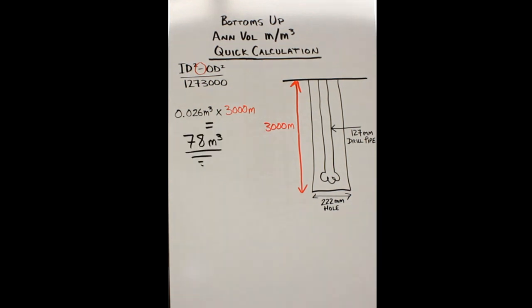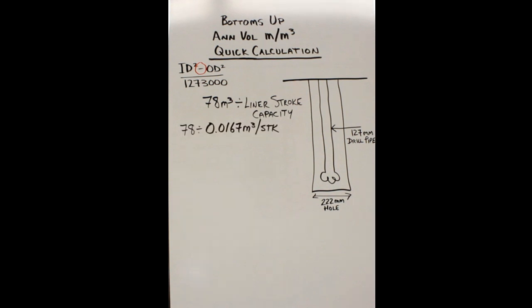Which equals 78 cubes outside of the pipe in the hole. Now you're going to take that total volume divided by your liner stroke capacity, which in this case happens to be 0.0167 cubes per stroke, and bingo bango, you got 4,646 to 4,670 strokes for bottoms up. Nice work.